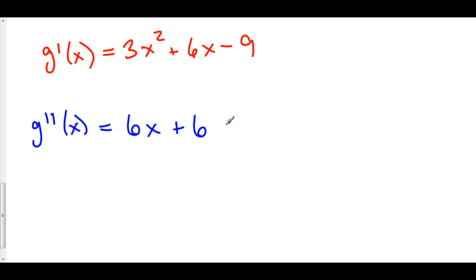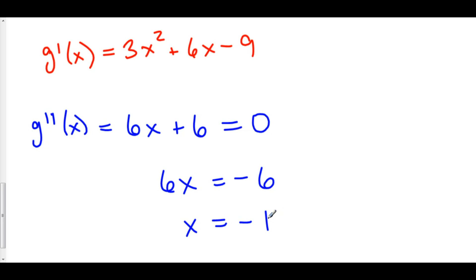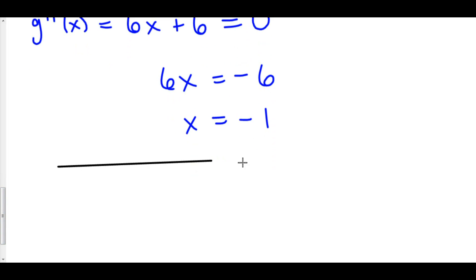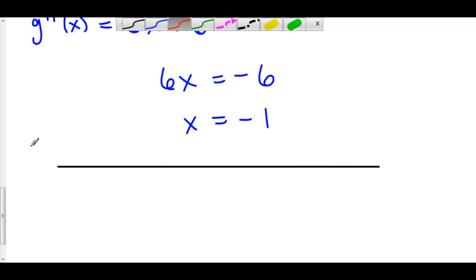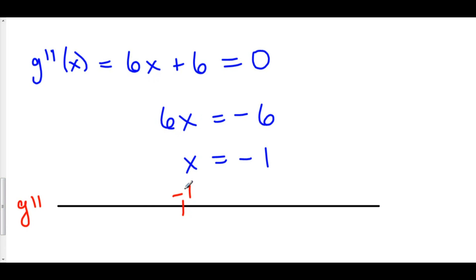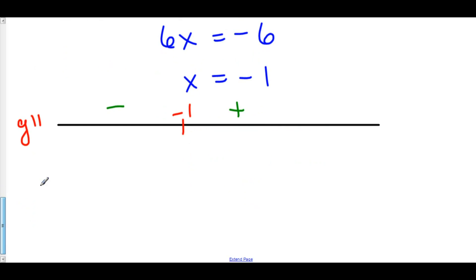This always exists, so let's set it equal to zero. That means 6x is equal to negative 6, and x is equal to negative 1. This is a possible inflection point, but to determine whether it actually is an inflection point, we need to do our second derivative line analysis. Plugging in a number to the left of negative 1, say negative 5: 6 times negative 5 is negative 30 plus 6, which is still negative. Checking to the right of negative 1 with zero: 0 plus 6 is positive. So we do indeed have an inflection point at x equals negative 1.